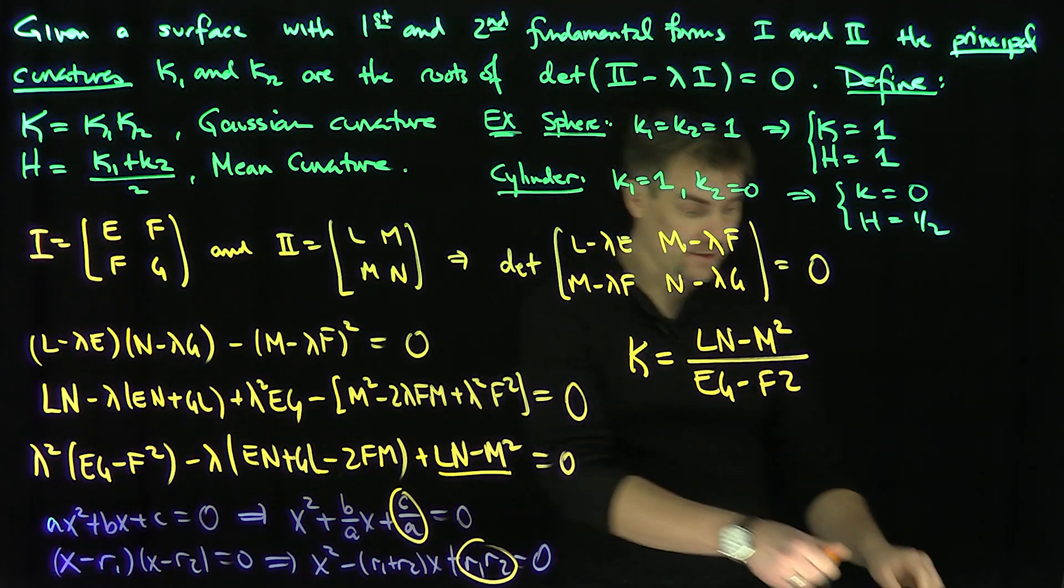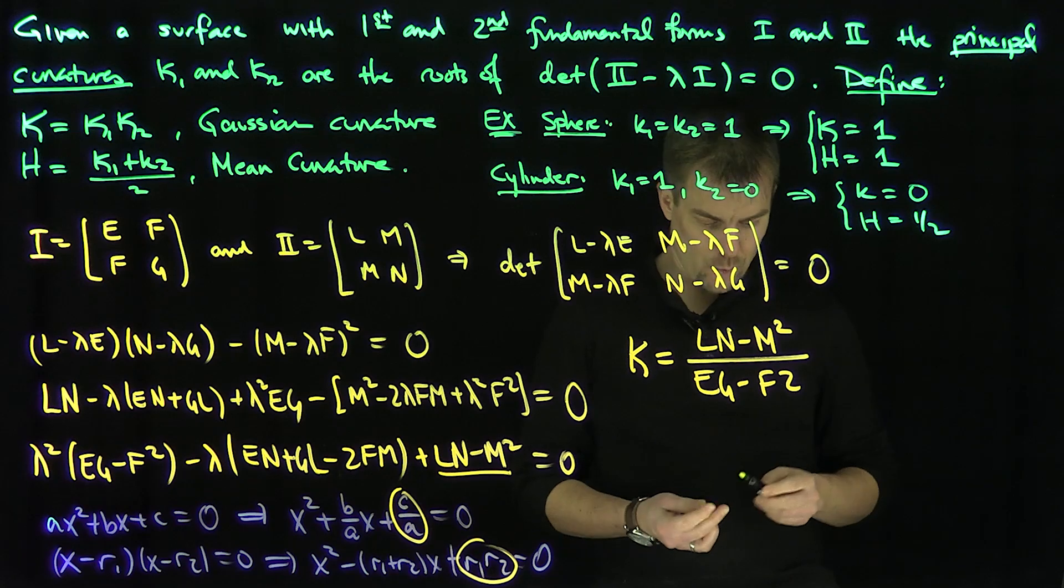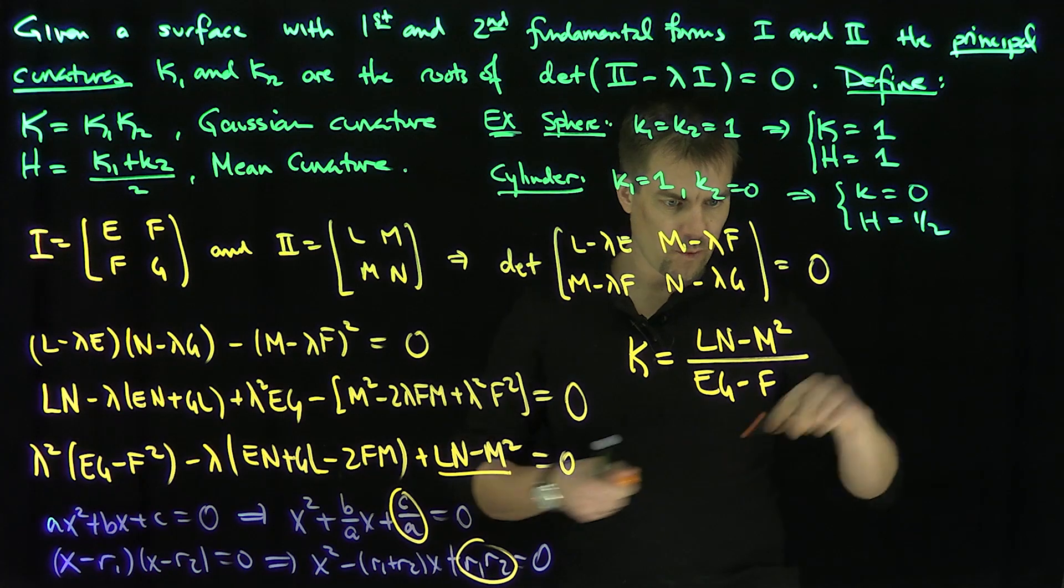And now let me make an important remark about this. I mean, this is actually very, very important. So that both these things, that's an F squared. Of course, F times 2, F squared. F squared.